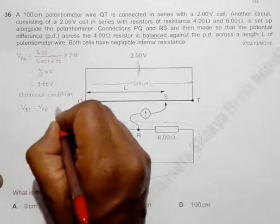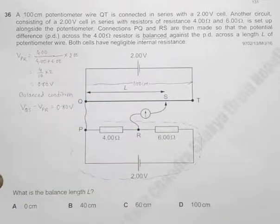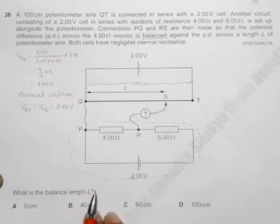VPR, and there should be equal to 0.80 volt. So VQS should be equal to 0.80 volt.